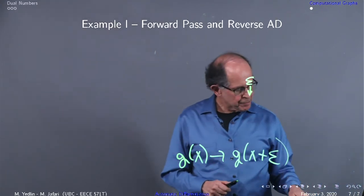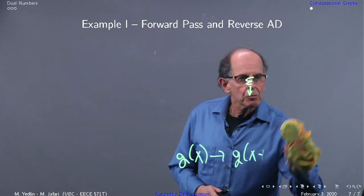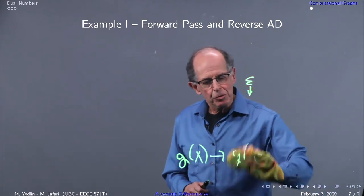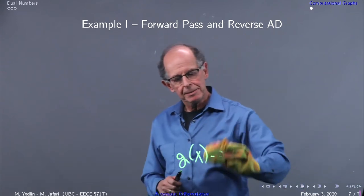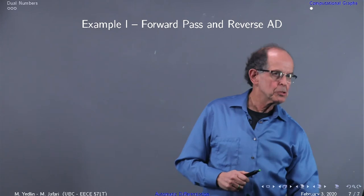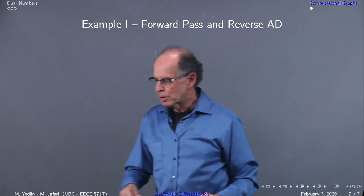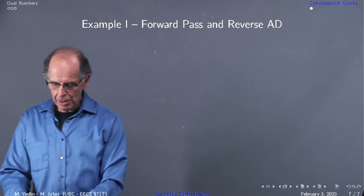f(g(x)) plus epsilon. So what we've done so far is dual numbers. We want to go forward now to computational graphs, which you can see on the right.